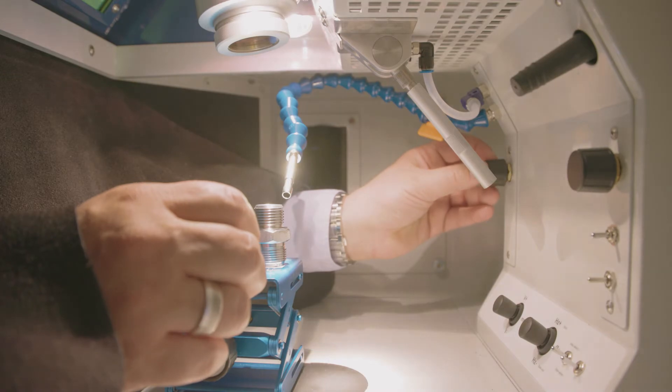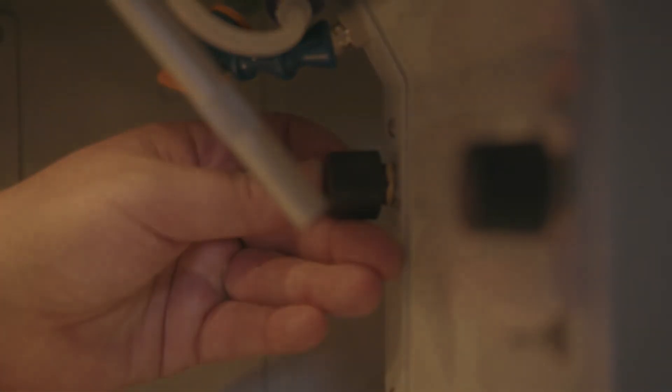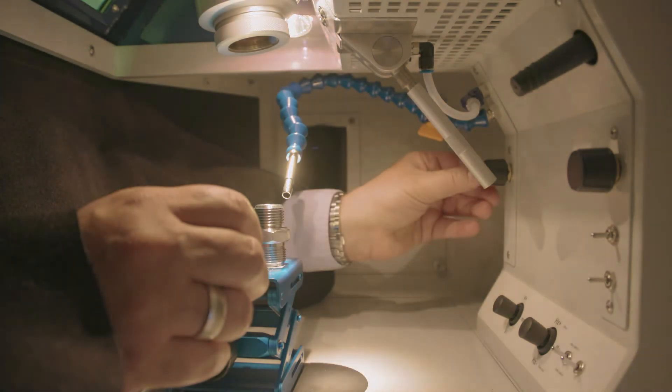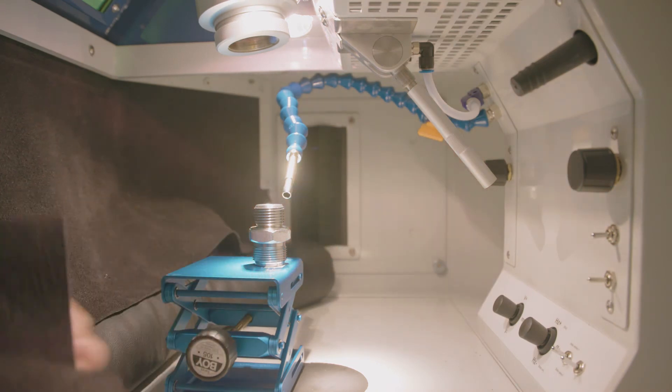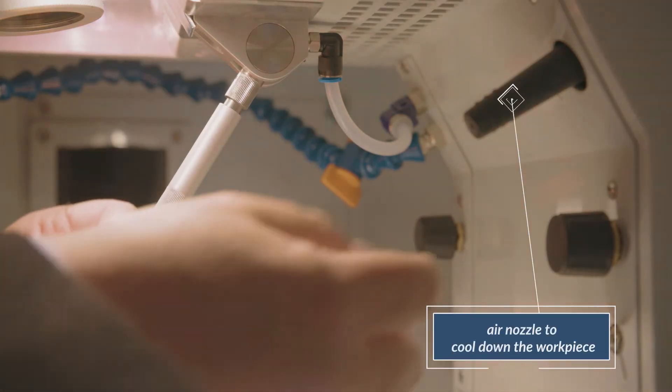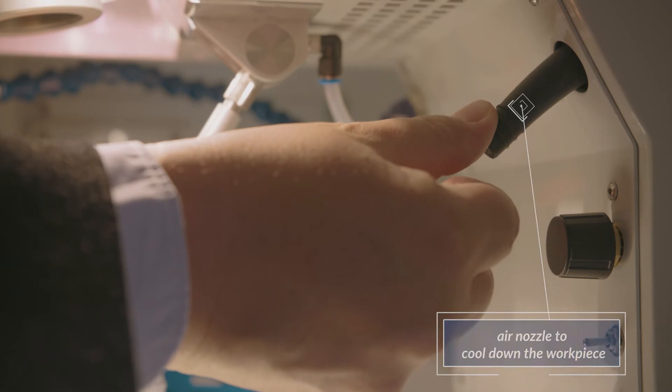To reduce possible glare of high-reflective surfaces, the brightness can be continuously reduced using a dimmer. An integrated air nozzle may be used to cool down heated components.